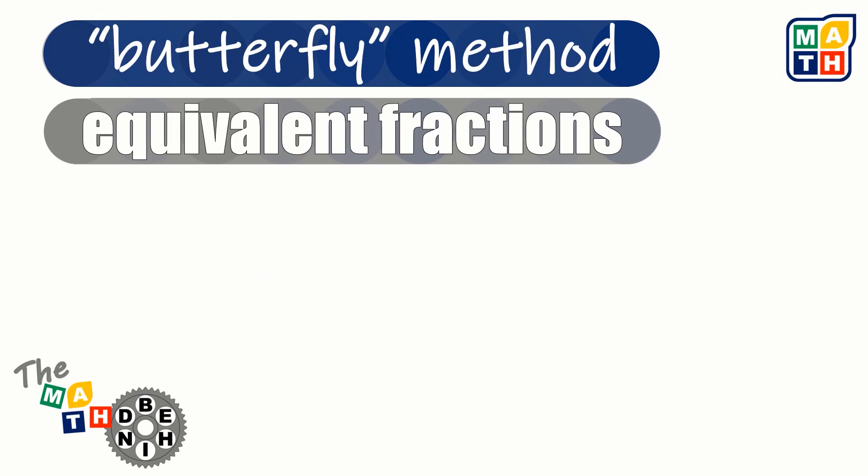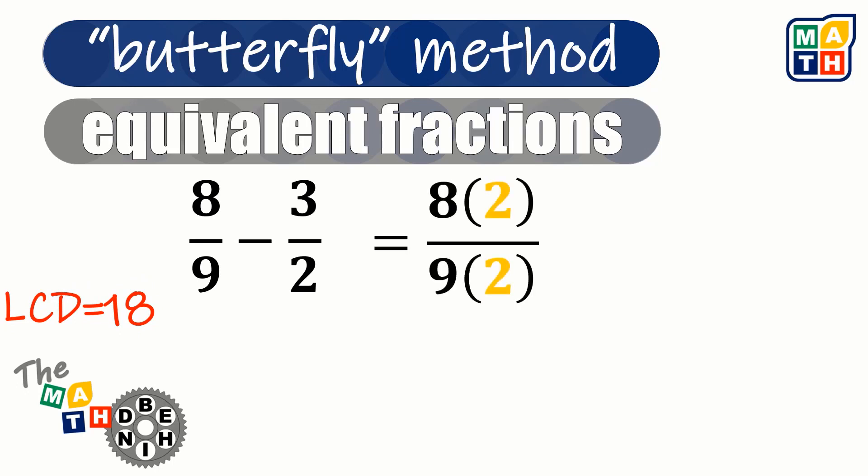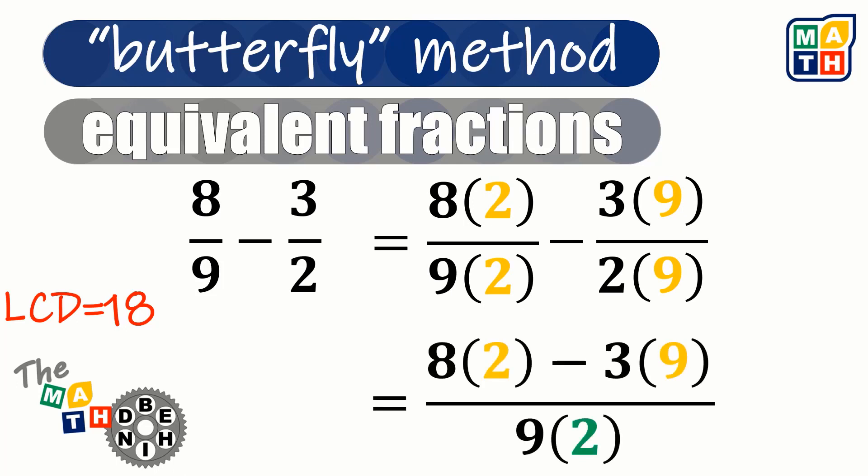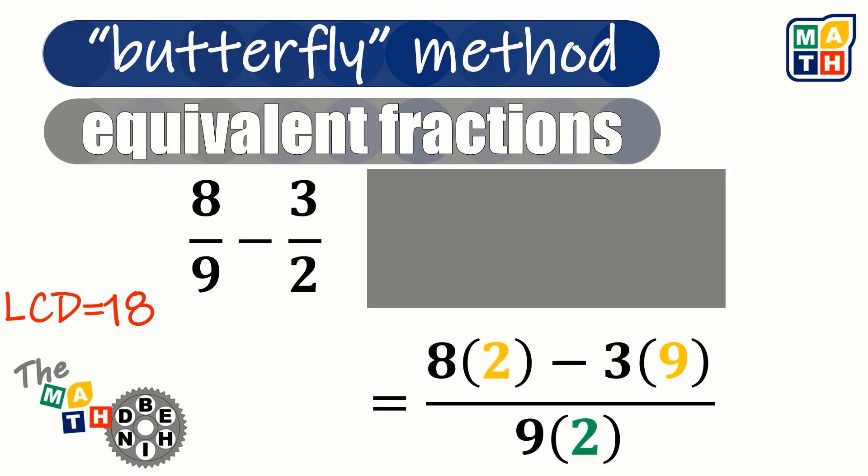On the other example, the LCD should be 18, so we could change 8 ninths by multiplying 2 and for 3 halves by a factor of 9. If we are going to cover the second step, we could see that the first term is a product of 8 and 2, while the second is by 9 and 3, separated by the same operation, subtraction. And then the denominator of the result is a product of 9 and 2.